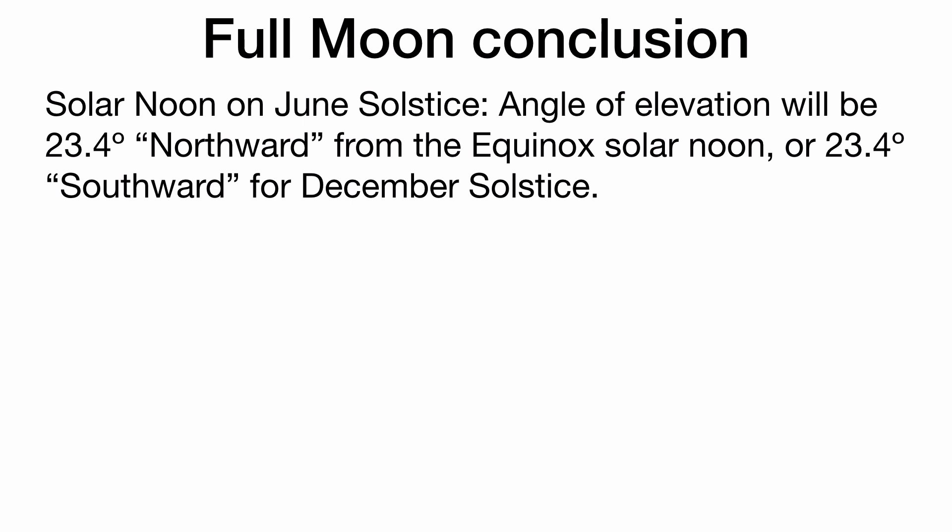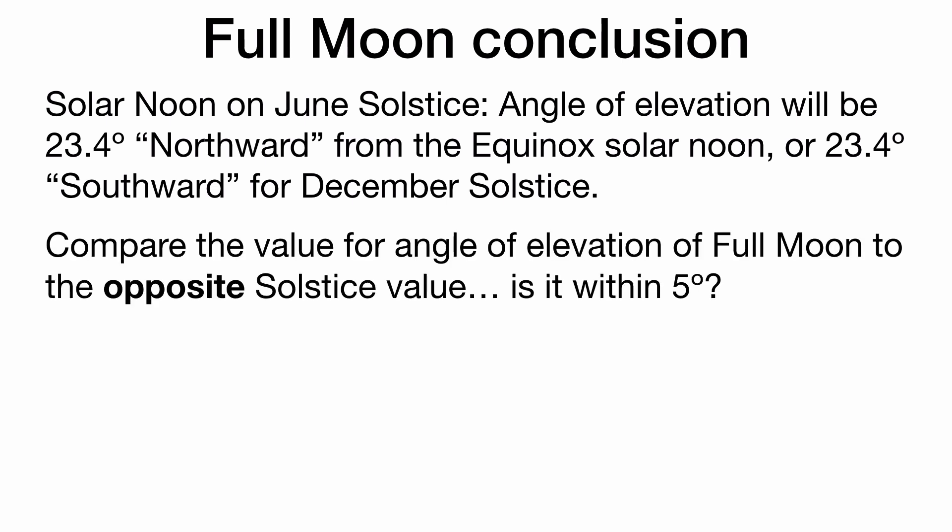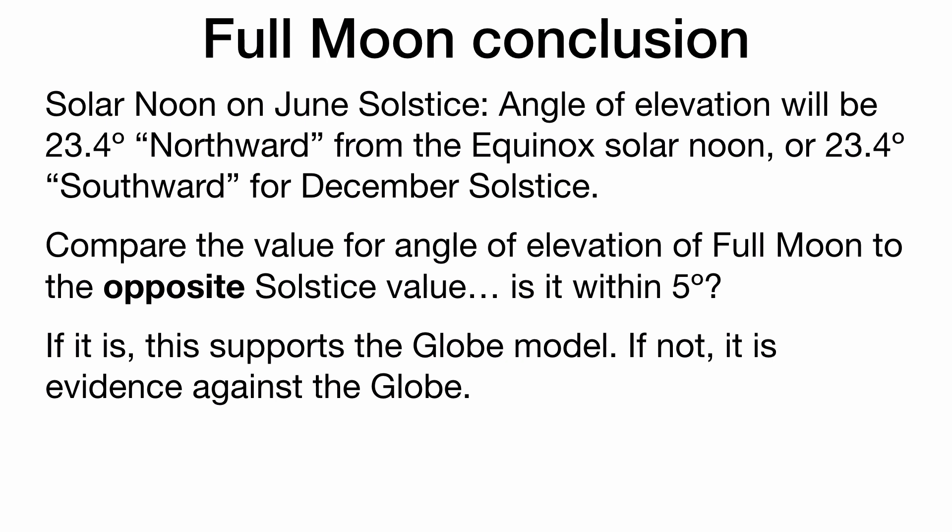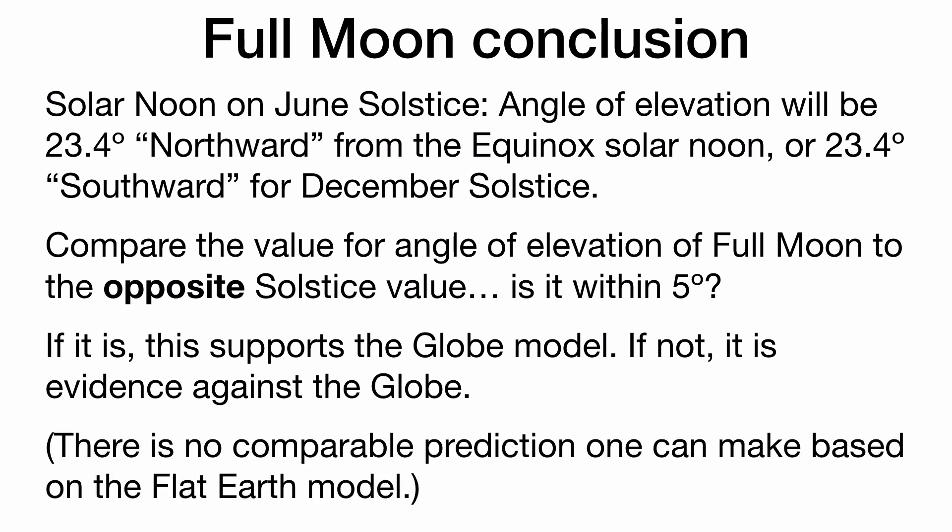Our conclusion for the full moon: at solar noon on the June solstice, the angle of elevation to the sun will be 23.4 degrees northward (June solstice) or 23.4 degrees southward (December solstice), compared to where it was on the equinox. Compare the full moon's angle of elevation to the opposite solstice. If it's within five degrees, this supports the globe model. If not, it is evidence against the globe, and there's no comparable prediction based on the flat Earth model.